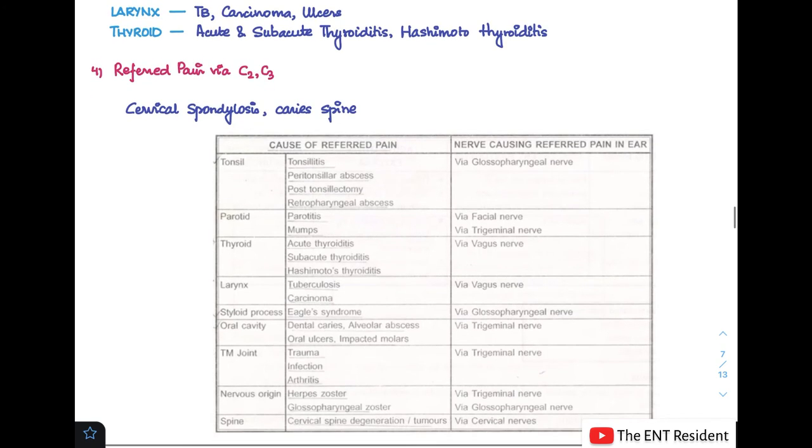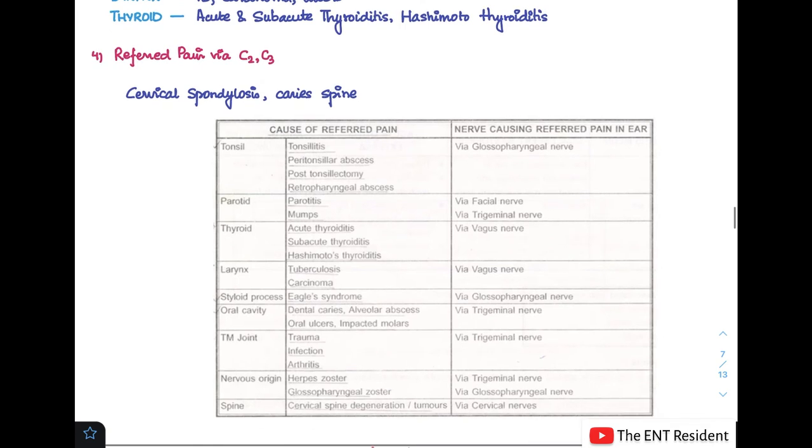Next is referred pain via the C2 or C3 cranial nerve. The C2, C3 cranial nerves cause pain in cases of cervical spondylitis and caries spine. These are the causes where it will cause referred pain in the ear.